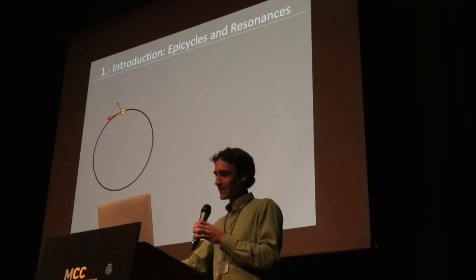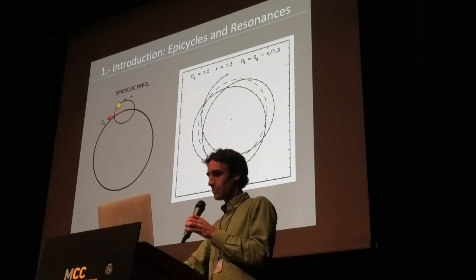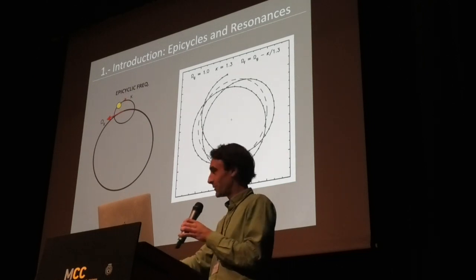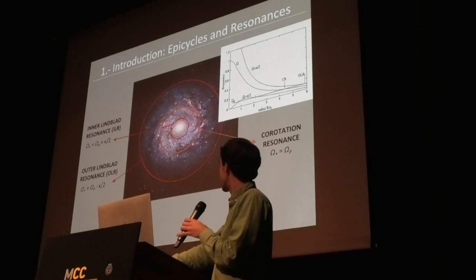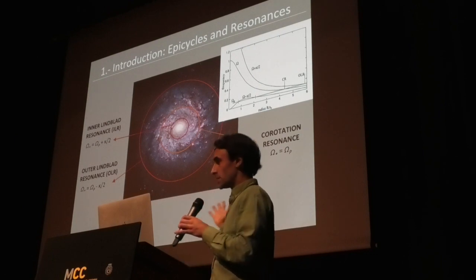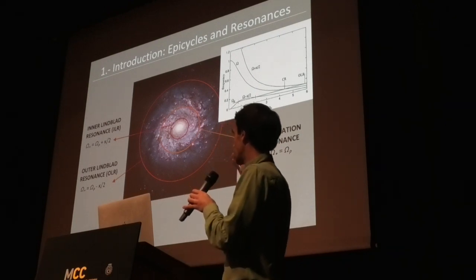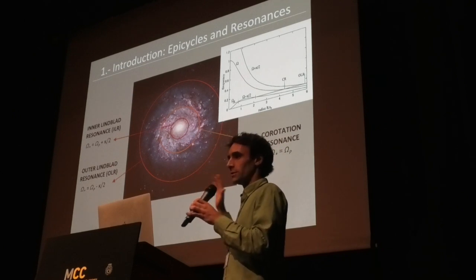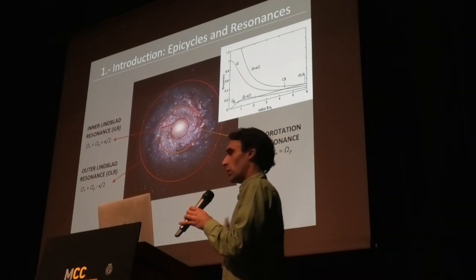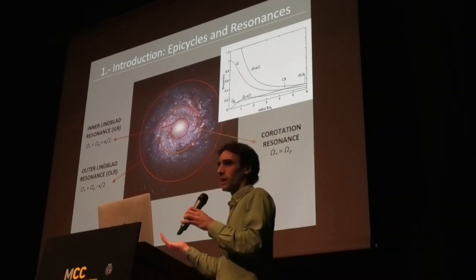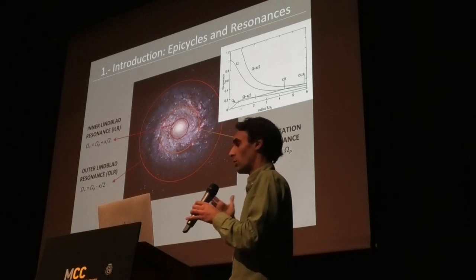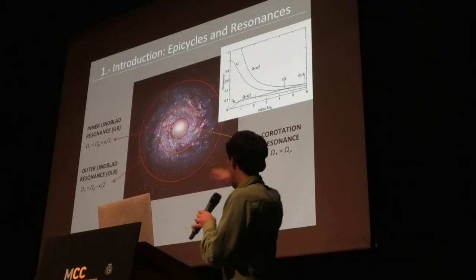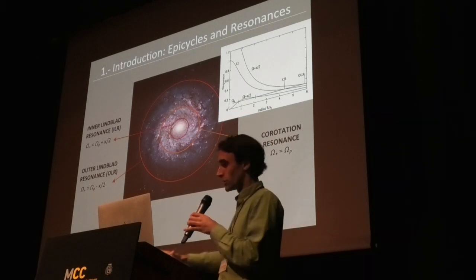A solution to this problem is the spiral density wave theory. Here I explained epicycles and resonances briefly. Basically, one can identify a radius where the material rotates together with a pattern, whereas inwards the material will overtake the pattern over time, and outwards the opposite will happen. These are related by the angular rotation curves.